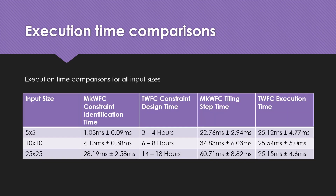When comparing execution times, the TWFC execution time was fairly consistent. However, the MKWFC tiling step was inconsistent and increased as input size increased, as a result of identifying larger constraint coverage. Due to the increase in diversity, the number of constraints that need to be compared against also increased, making MKWFC slightly slower than TWFC.